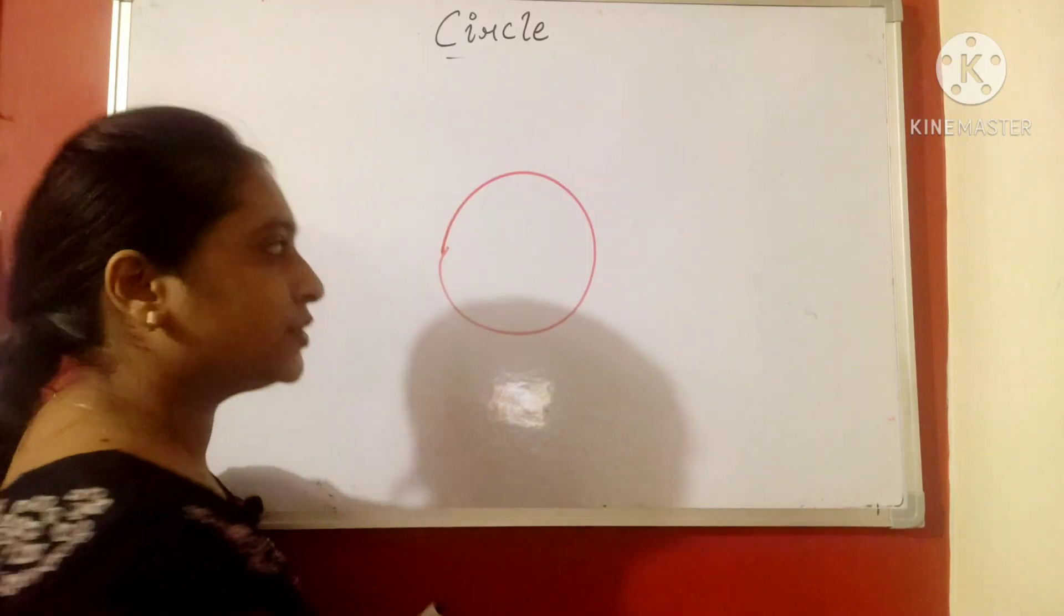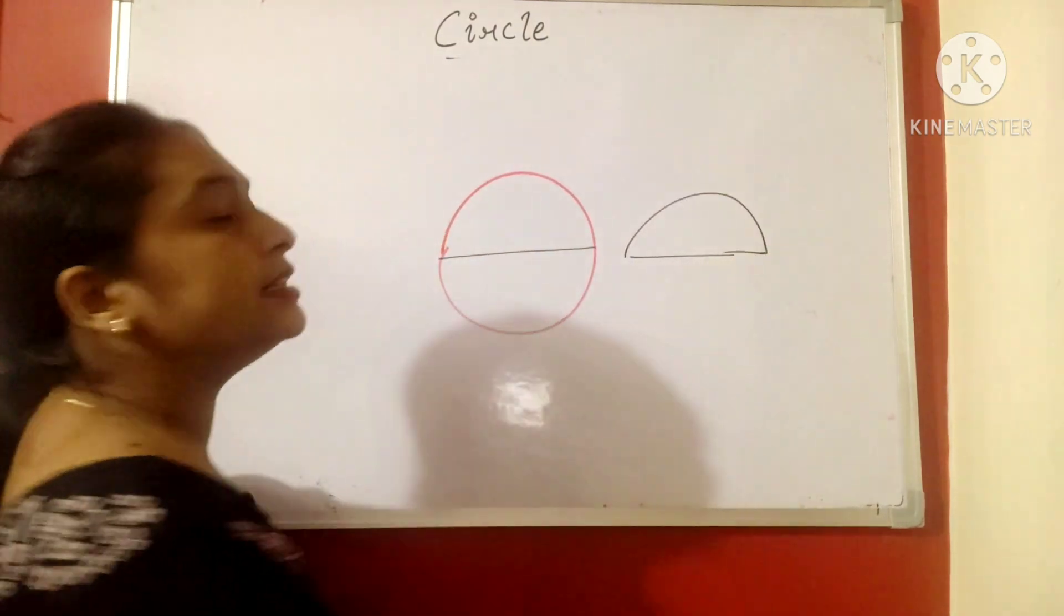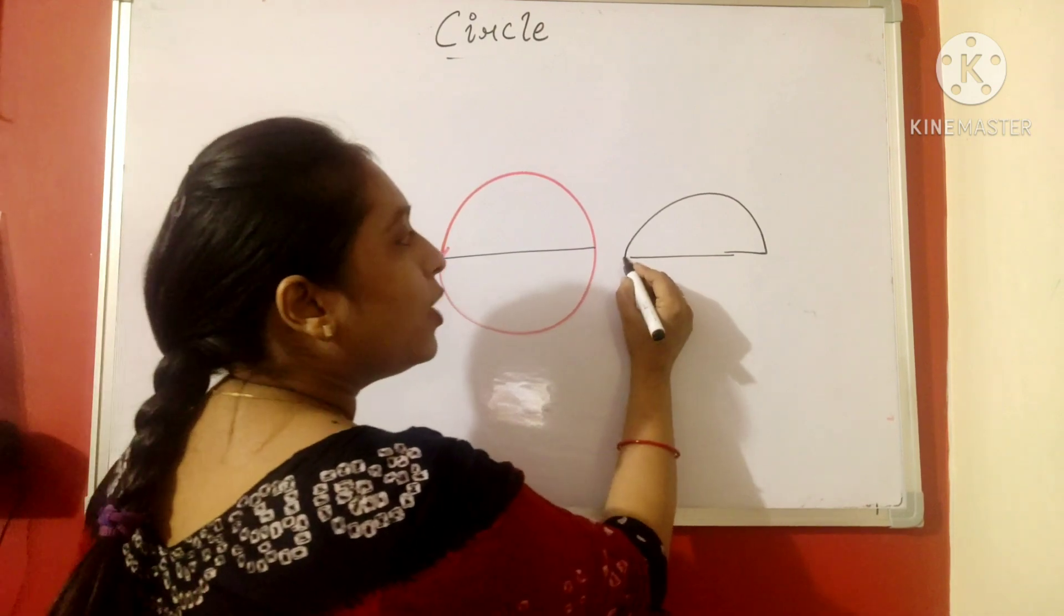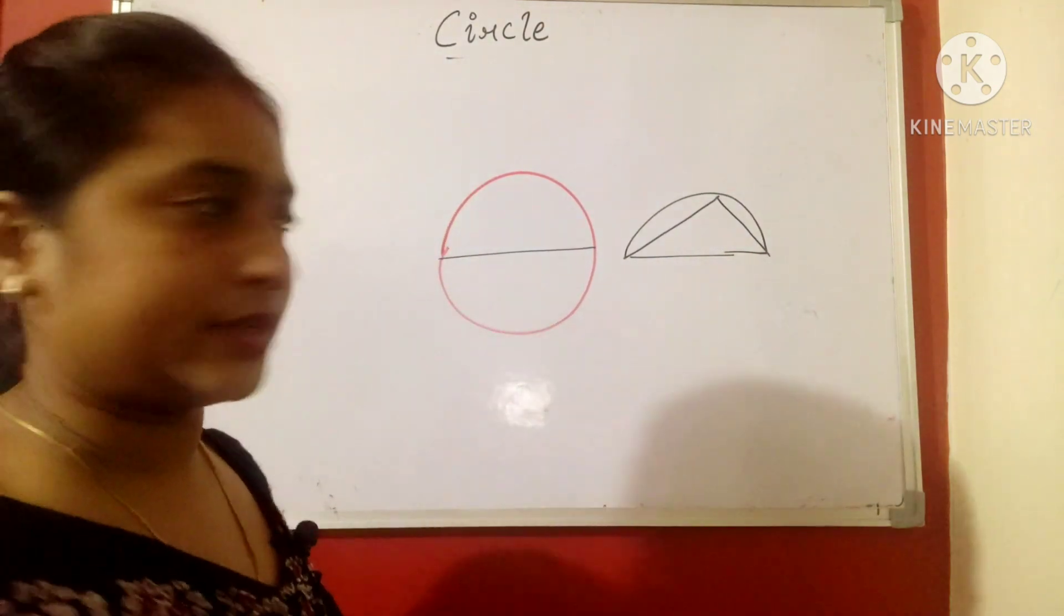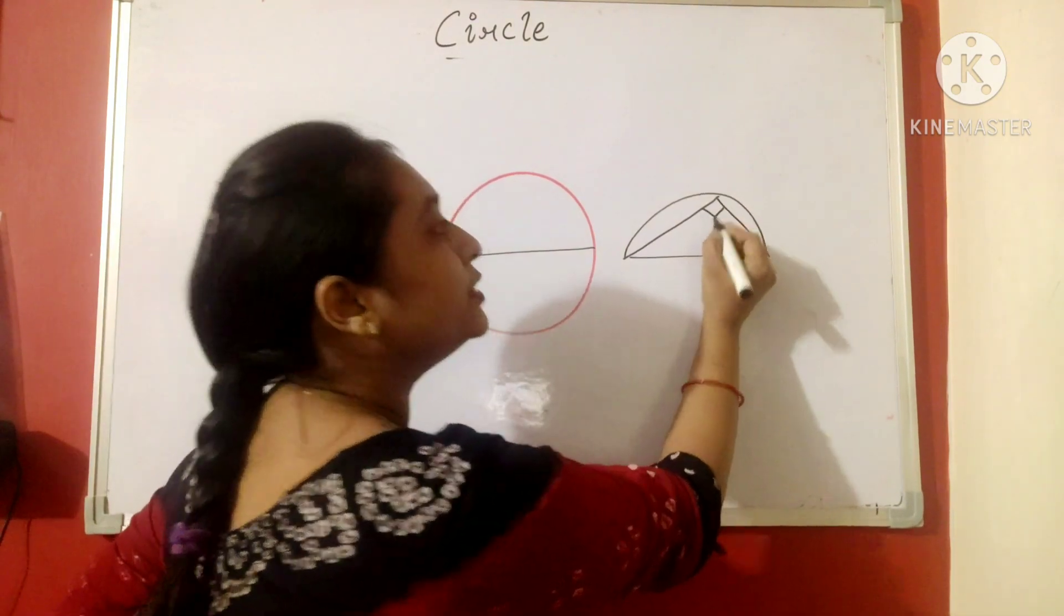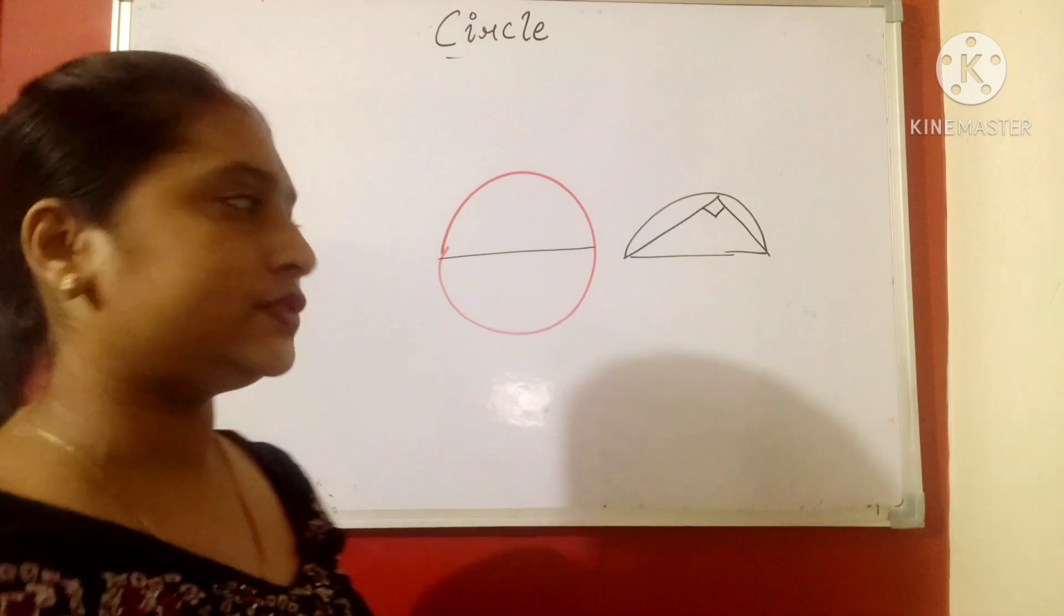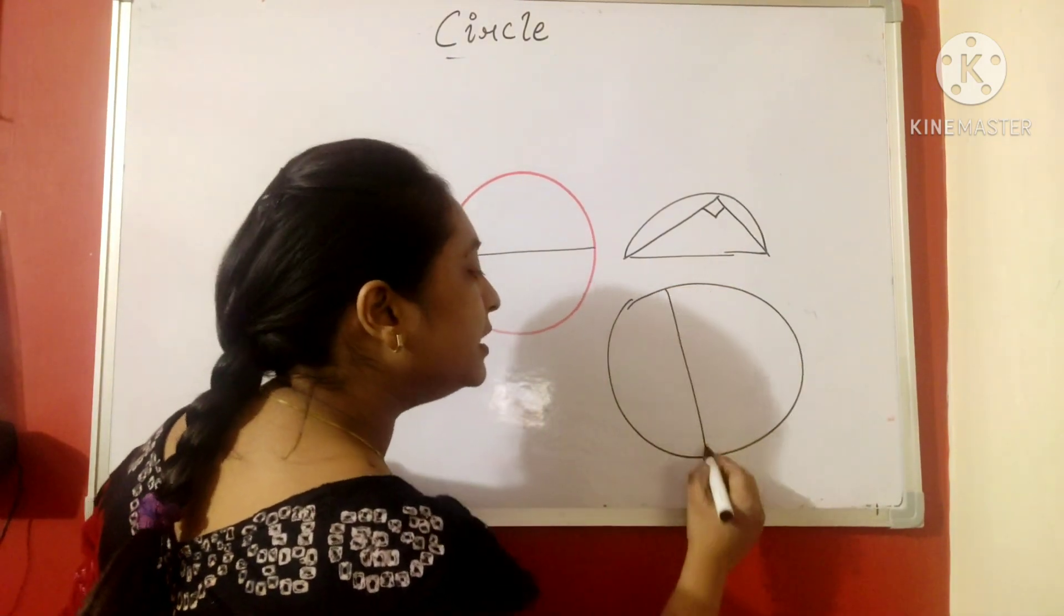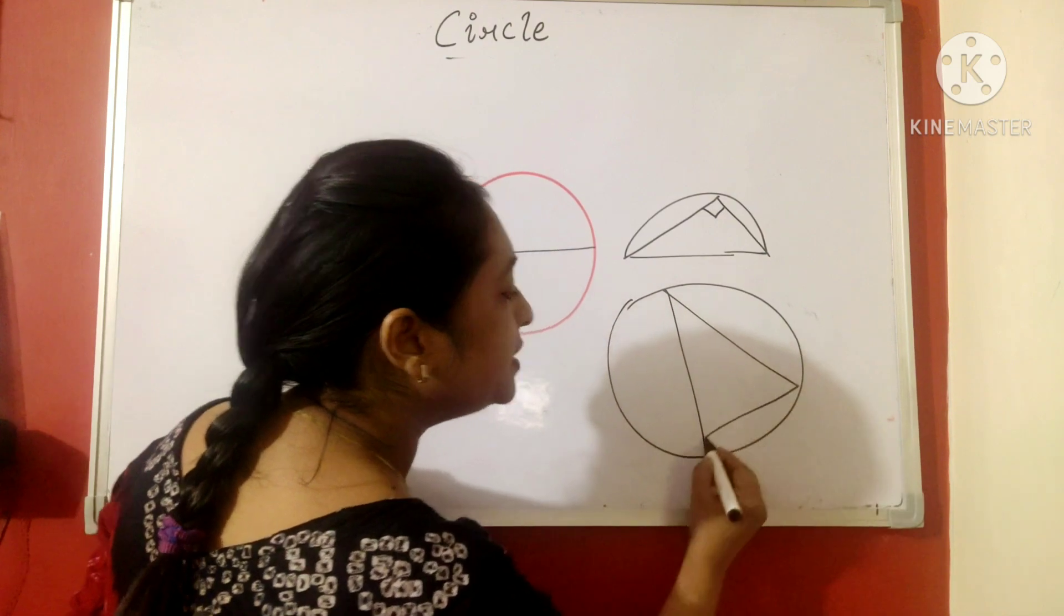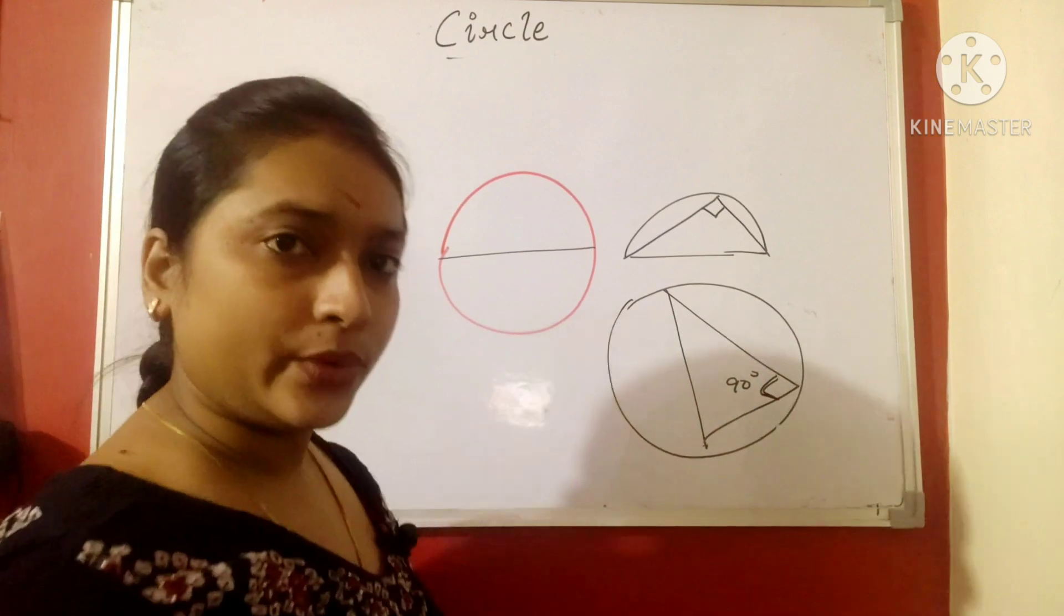If I talk about half circle, this half circle is called as a semi-circle. Now, an angle inscribed in a semi-circle, this angle is always 90 degree. This is one of the property of the circle that whenever any angle is inscribed in a semi-circle, it is 90 degree always.